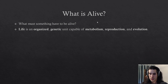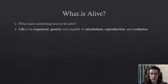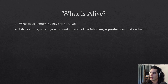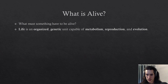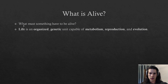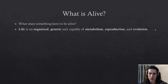In order to study living stuff, we have to first define what it means to be alive — what are the things that constitute living organisms? There's several definitions, but there's no clear line between living and non-living stuff, because the transition is more gradual than one would think. Using a collection of definitions, life is an organized genetic unit capable of metabolism, reproduction, and evolution.